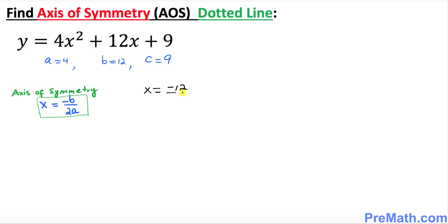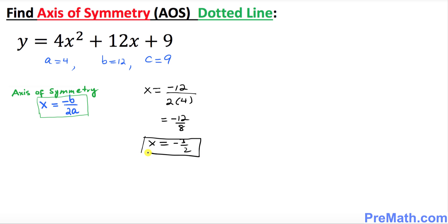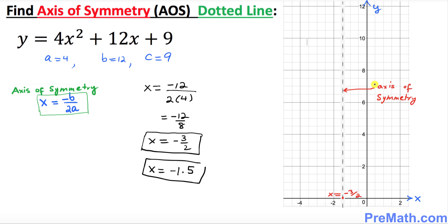So x is going to be equal to negative b, which means negative 12 on top, over 2 times a which is 4, giving us negative 12 over 8. If you reduce that, it's negative 3 over 2. So our axis of symmetry turns out to be negative 3 over 2, or negative 1.5 in decimal form.